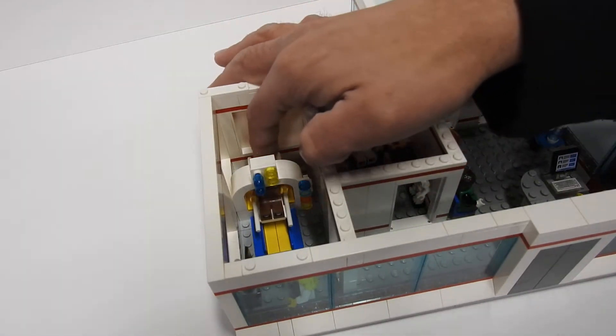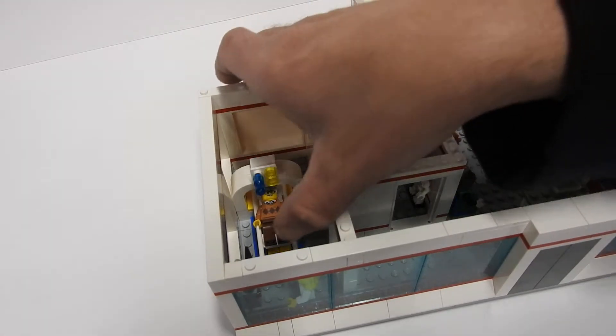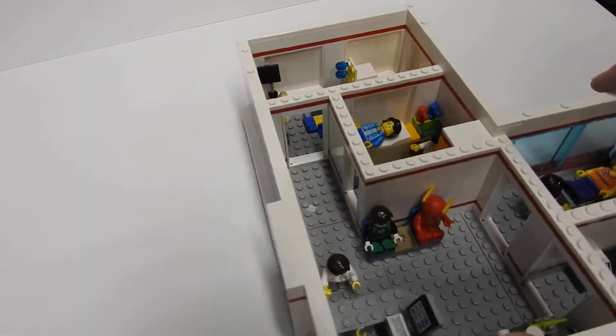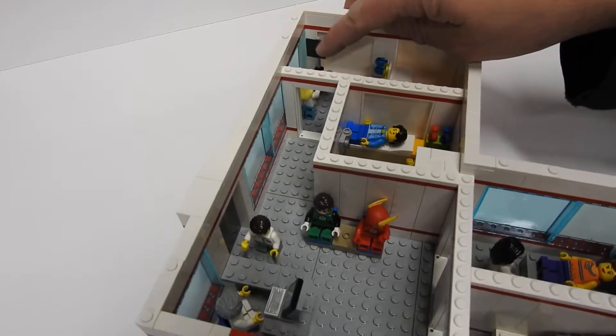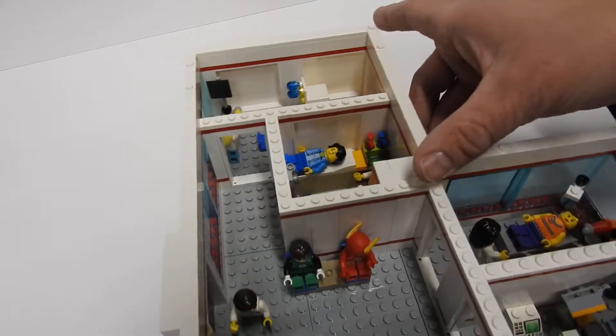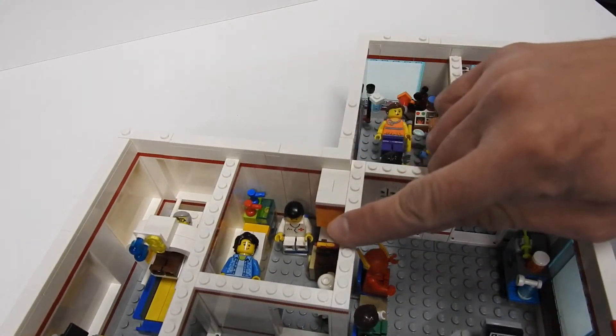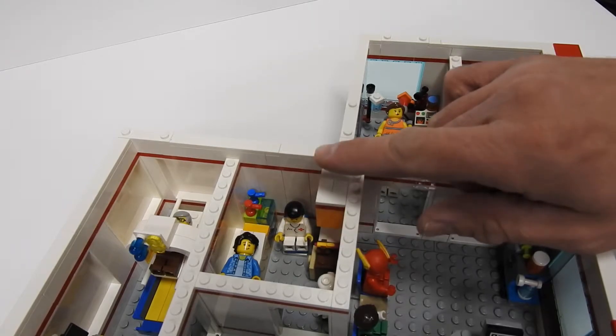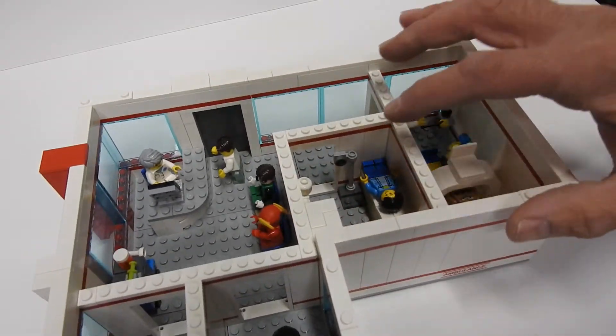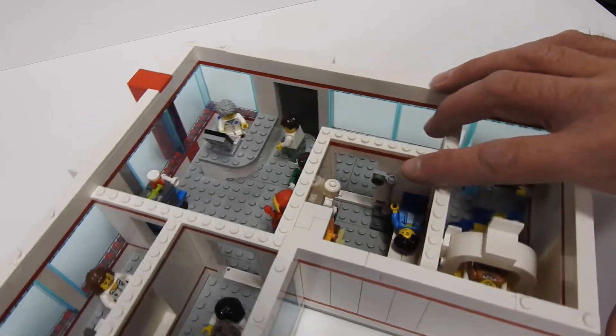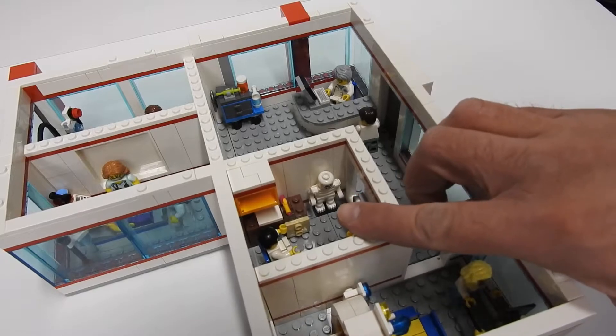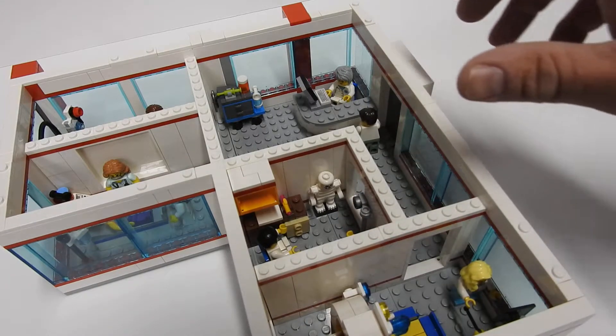Over here you've got some type of machine to do a body scan. Got a little nurse here doing the machine there. And this room right here is just a little doctor's office room. Place to lay down, got a machine to weigh you, got a little desk with a skeleton. The doctor can talk to you about whatever you need.